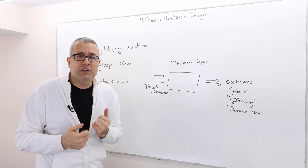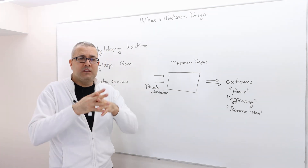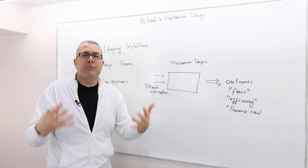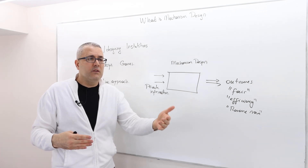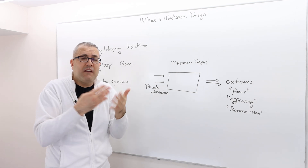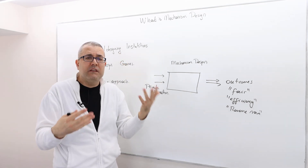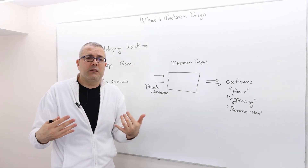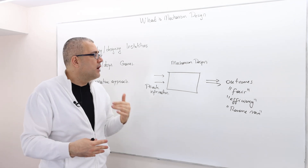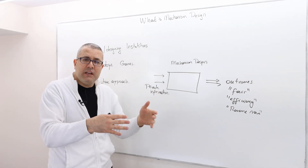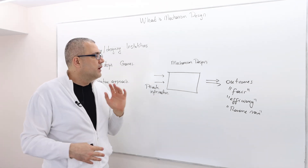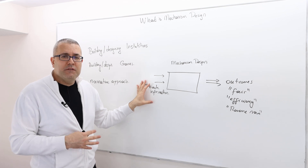But usually this information — the payoff — is private information, meaning the participants are aware of their own payoffs but the mechanism designer is usually not. Think of an auction environment: as the auctioneer, you have no idea how much the potential bidders value the object — whether they value it at a million, five million, or ten million dollars. The bidders know how badly they want the object, but you don't.